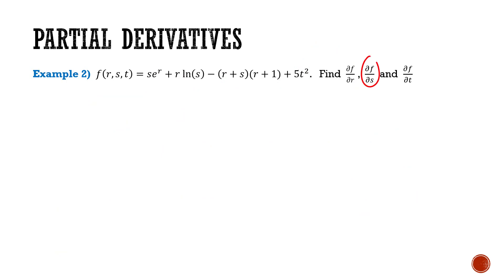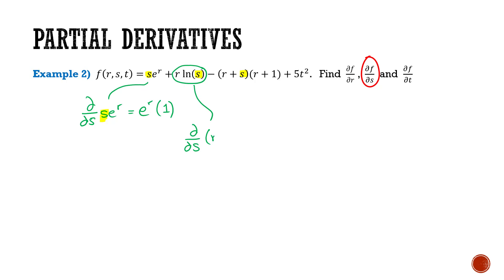Now let's do ∂f/∂s. This time we're looking at s as the variable that's changing, and all other variables as constants. The derivative of s·e^r with respect to s: s is the variable changing and e^r is a constant, so e^r becomes the coefficient to s, times the derivative of s which is 1. Now the derivative of r·ln(s) with respect to s: r is treated like a constant or coefficient, so this is r times the derivative of ln(s), which is 1/s, giving simply r/s.